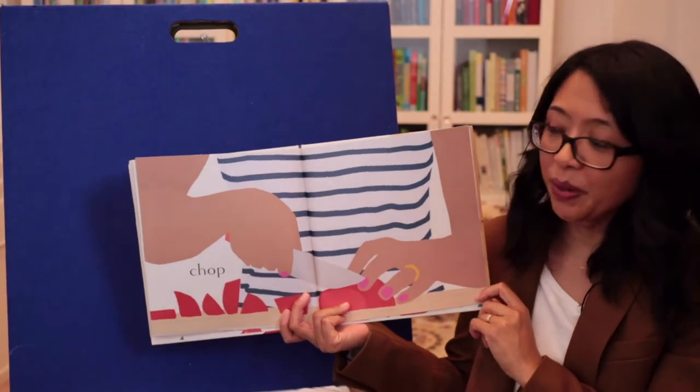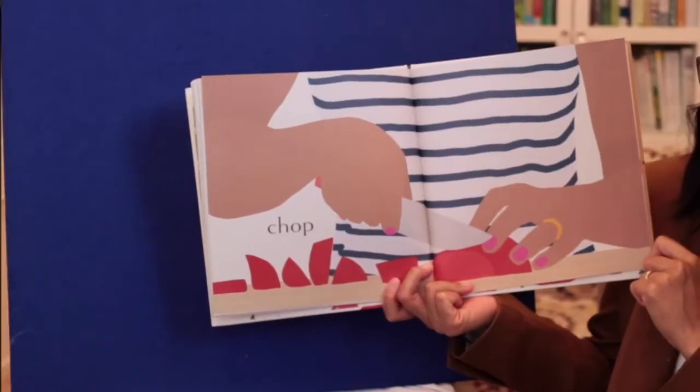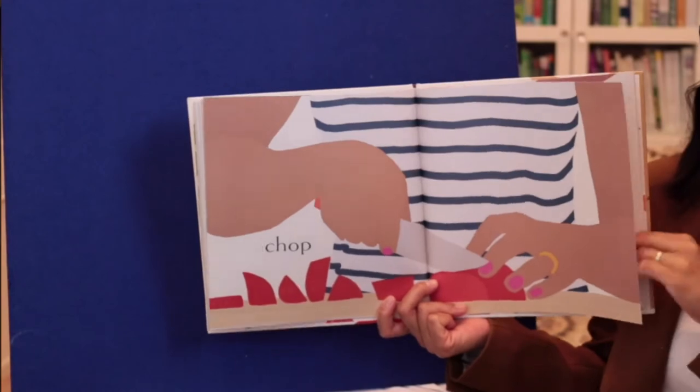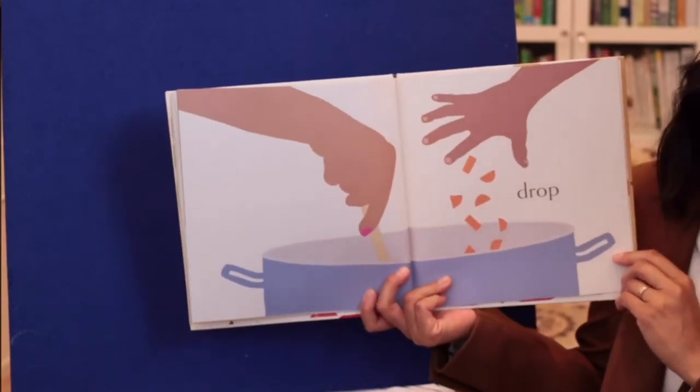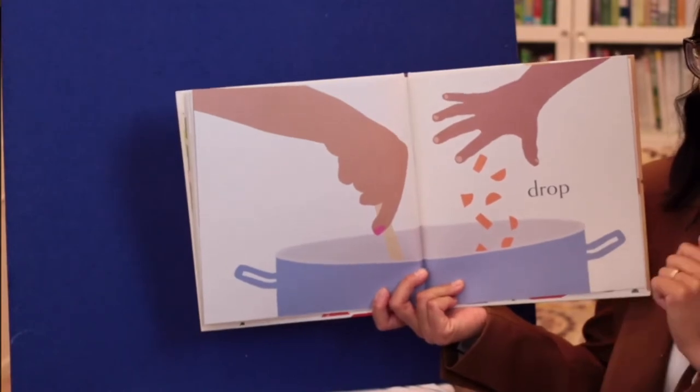Now, here's a grown-up. Chop. Chopping up some tomatoes. And drop. Drop them into the pot.